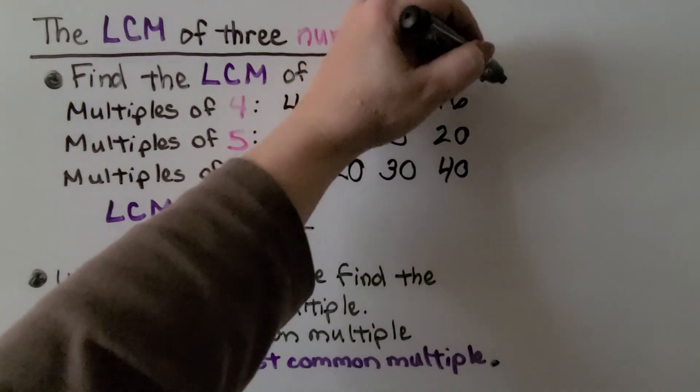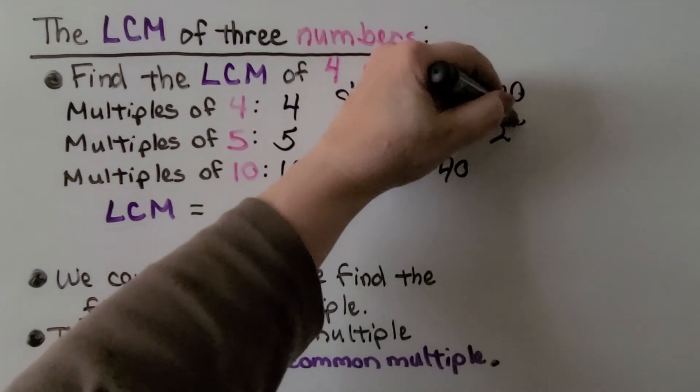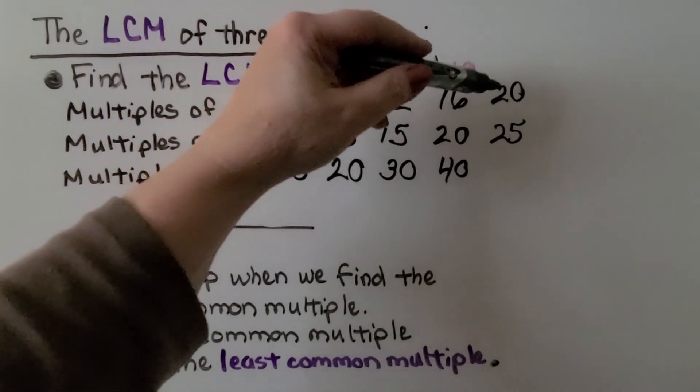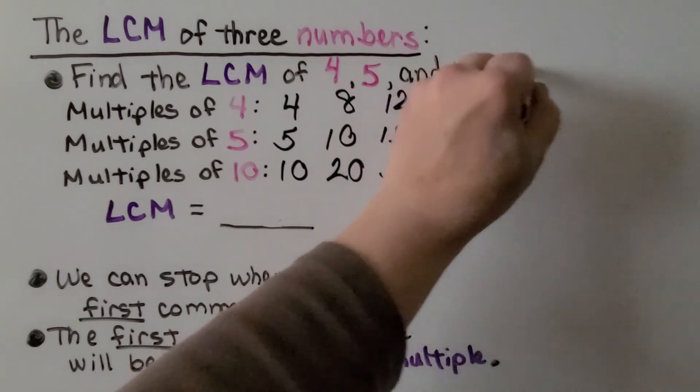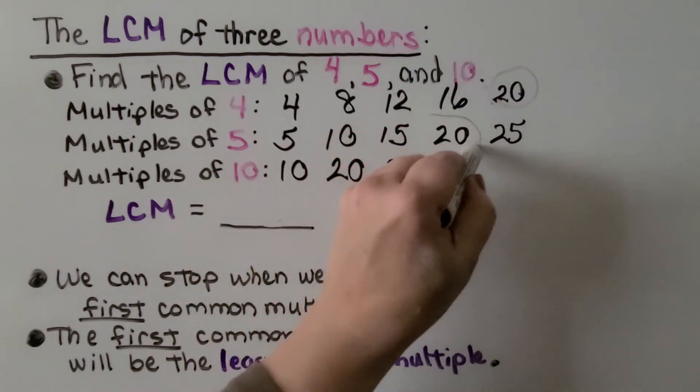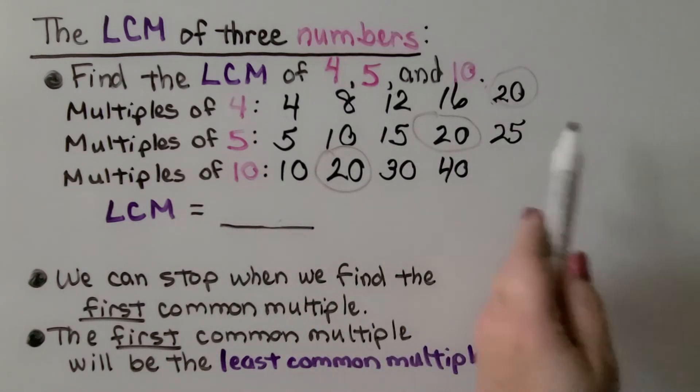Now we can do the times 5's. 4 times 5 is 20. 5 times 5 is 25. Wait a minute. Look. We can stop. I didn't even need to do that one. I see a 20, a 20, and a 20. We don't need to list any more multiples.